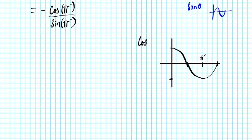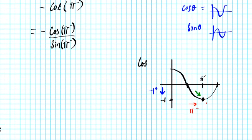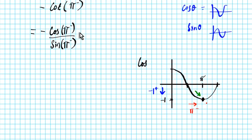We're approaching pi from the left side along the cosine graph. As we approach pi from the left, we are descending towards that point. The corresponding y-coordinate we descend towards is negative one, so we're approaching negative one from above — that's negative one from the right direction.